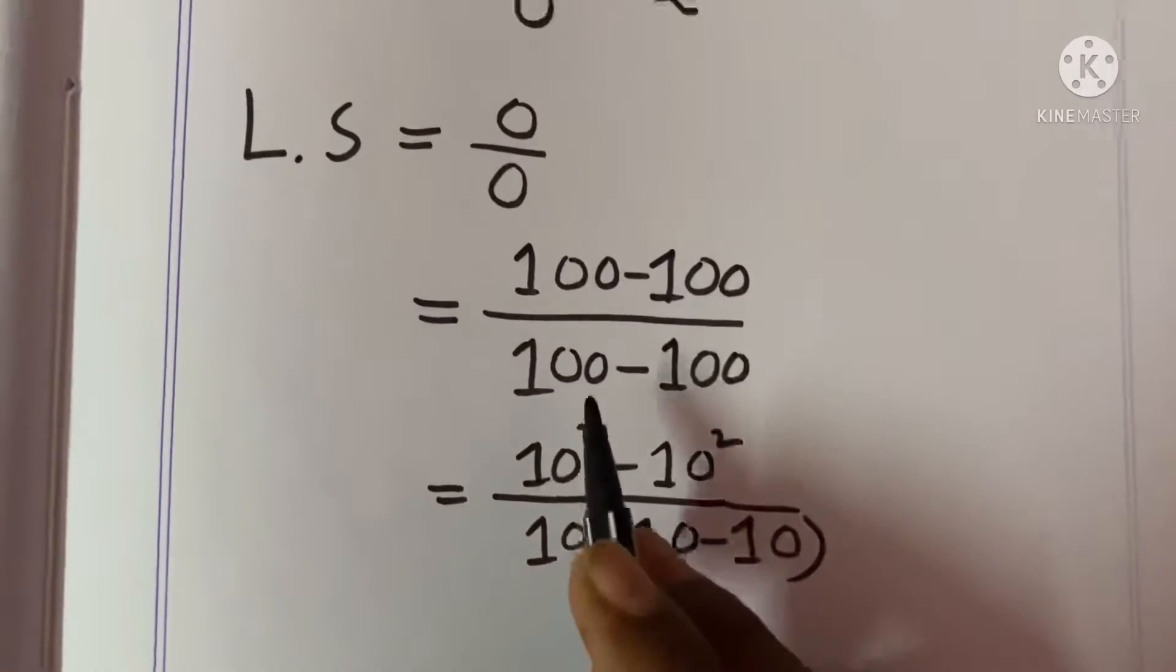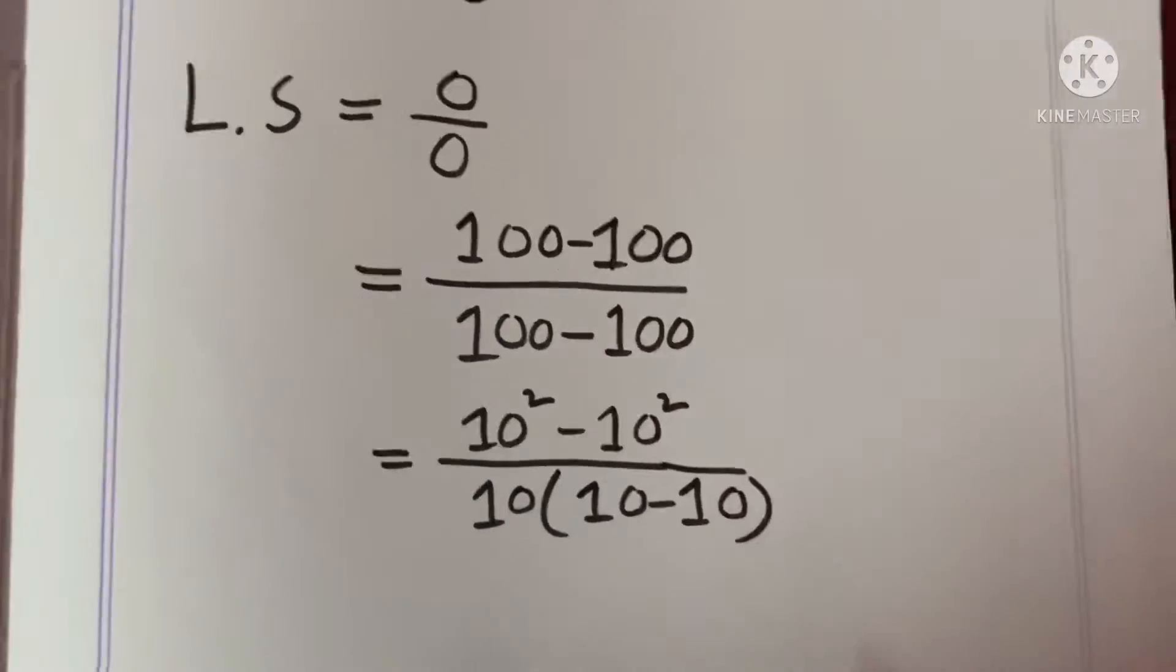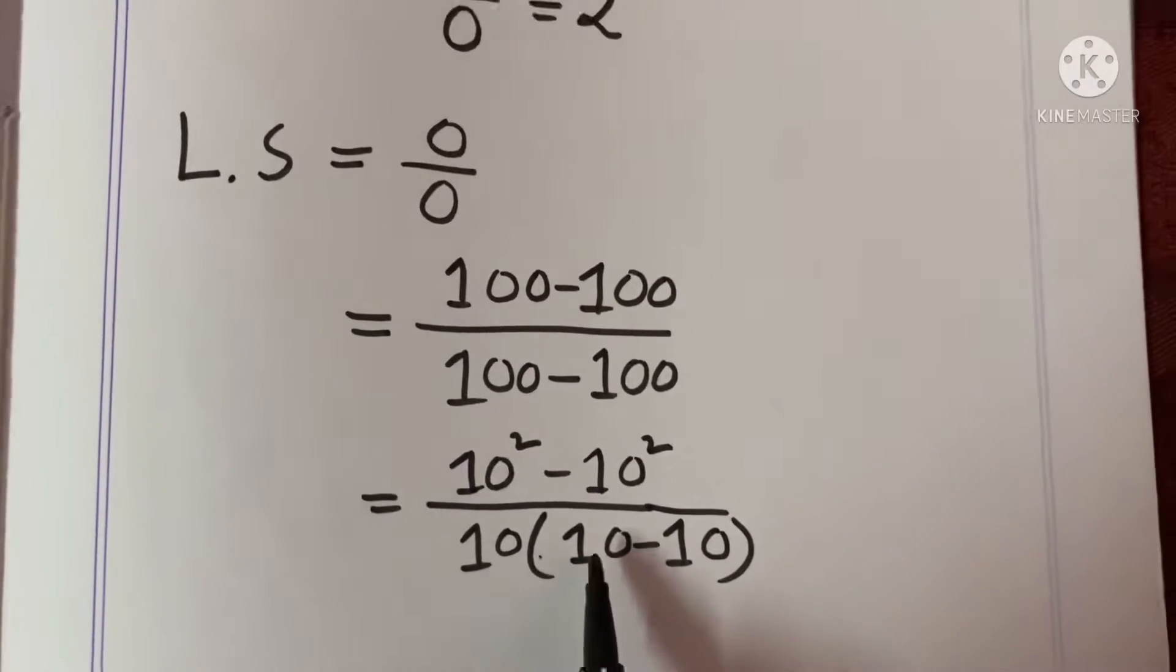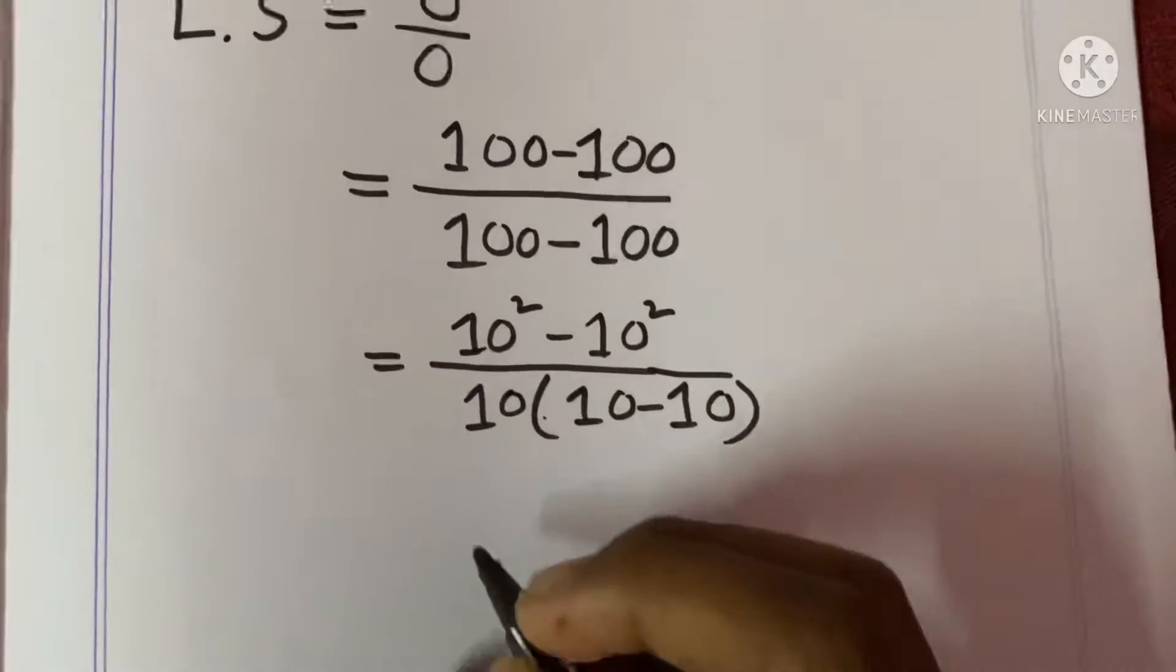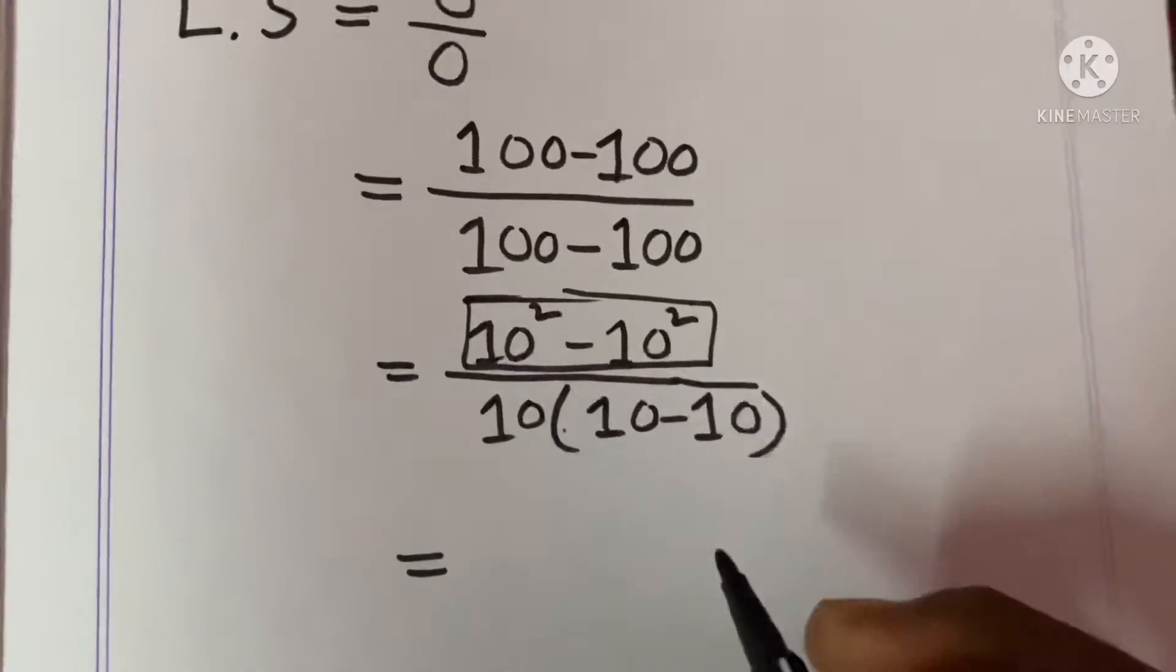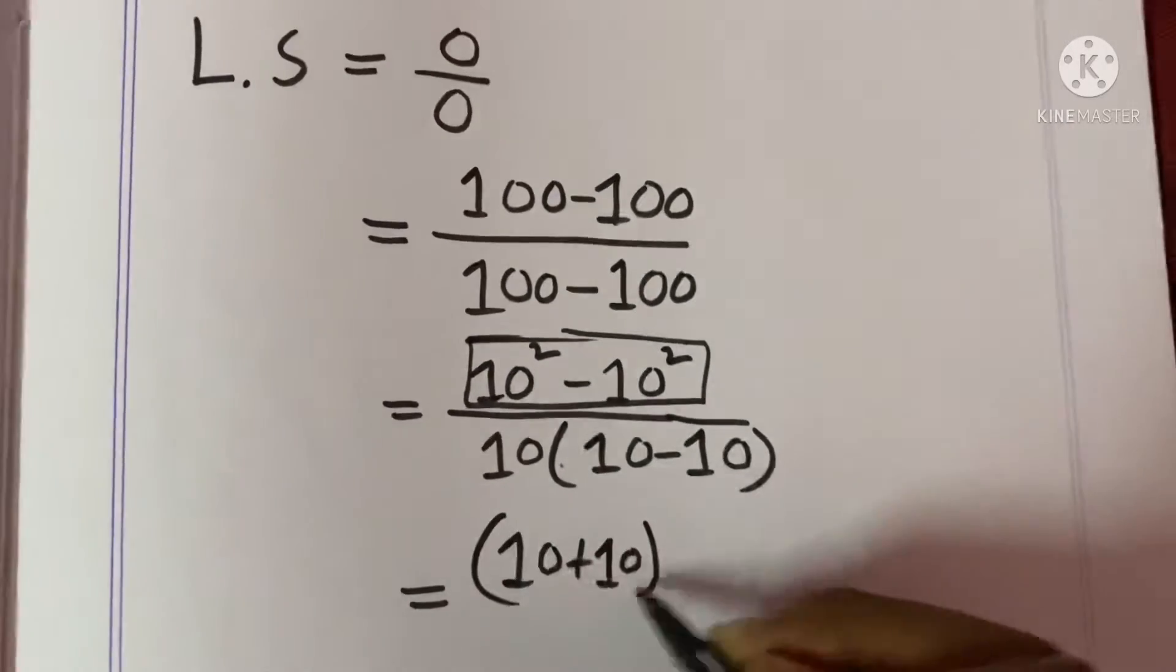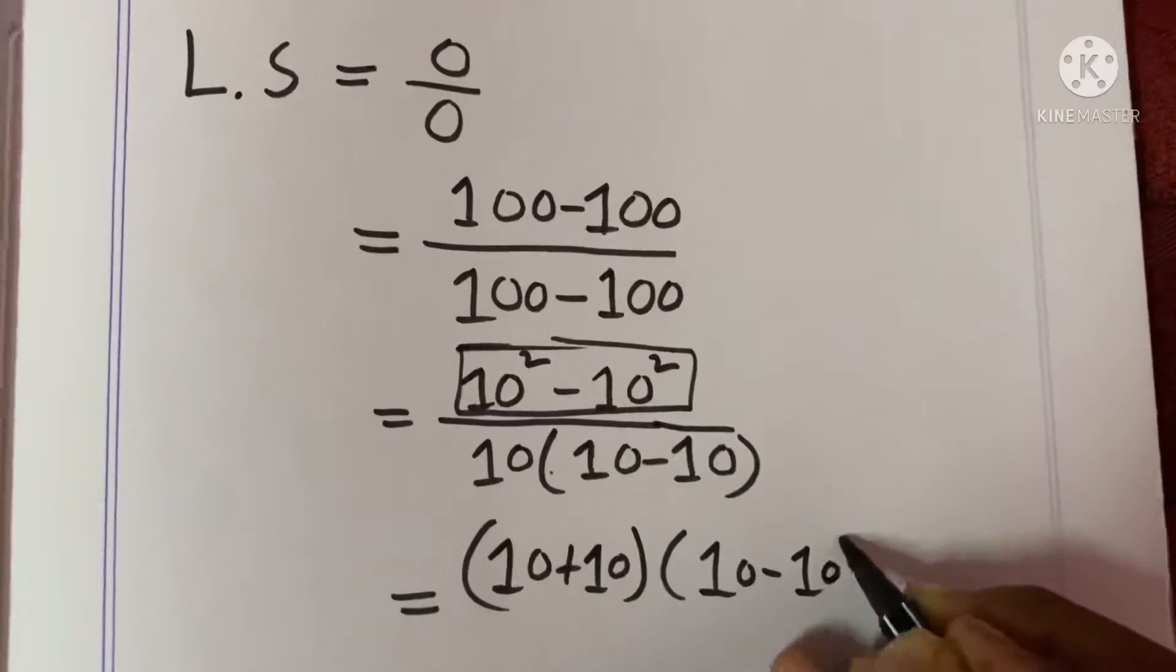Right, 10 square means 100, you can search it on Google. And 10 square minus 10 square, if we take common 10, it's 10 in the bracket (10 minus 10), right? So here we have to use the formula: a square minus b square equals (a plus b) into (a minus b).